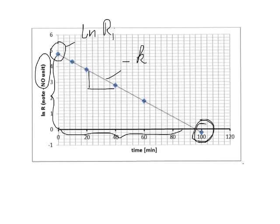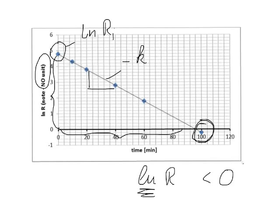Another important point: this graph can go into the negative range, and we need to remember that we are dealing with ln. The ln of R can be less than zero — it can be negative. It doesn't mean that the reactant concentration is negative; it just means that the ln of the reactant concentration is negative.